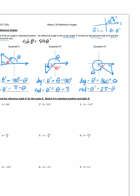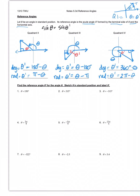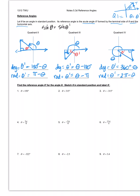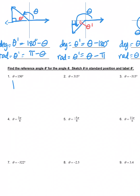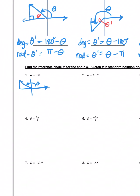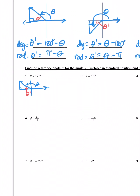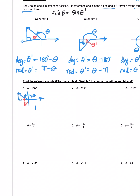Now let's walk through examples. Number one: find the reference angle theta prime for 150 degrees. 150 degrees lands in quadrant two, so theta prime is inside the triangle formed there. Following the quadrant two rule, I take 180 degrees minus 150 degrees, which gives me 30 degrees. So theta prime is 30 degrees.